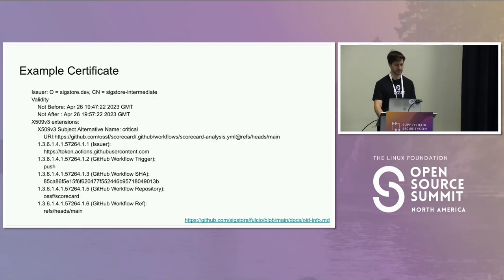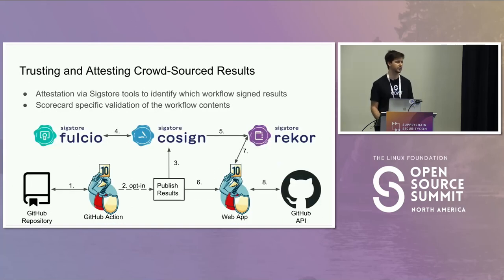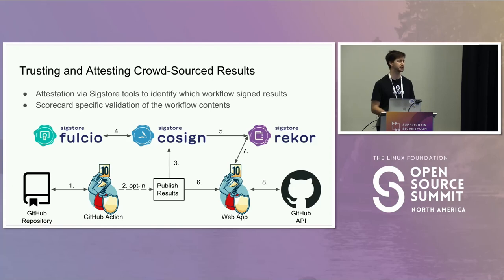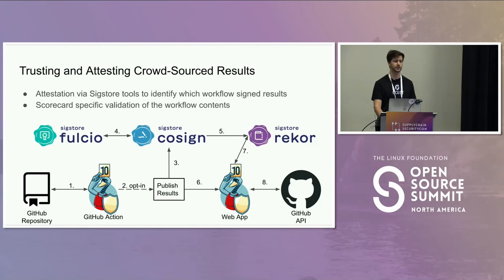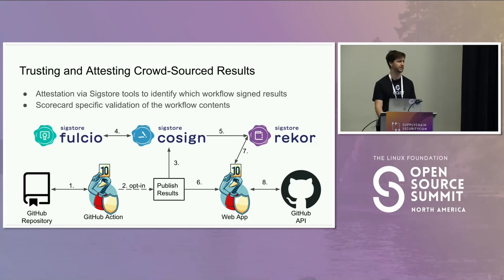That's a conclusion — jumping back to the overall picture. We started off with a repository where the analysis happened. A user opted in to publishing those results to help us scale our dataset — they want to display a readme badge and show off their score. That result was signed with Cosign using an ephemeral certificate from Fulcio. We're trying to make this as painless as possible, which is one reason we used keyless signing. That certificate entry got included in Rekor's transparency log, so when we move the results from the action to the web app, we could look up detailed information about where these results came from, and then do our own analysis with the GitHub API to trust and include them in our dataset.